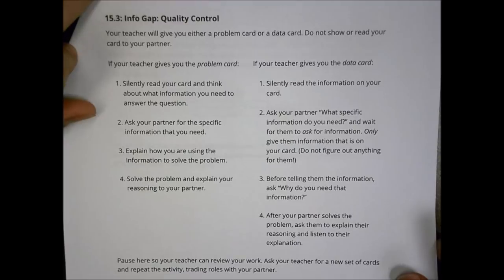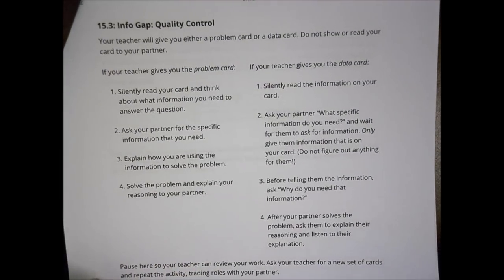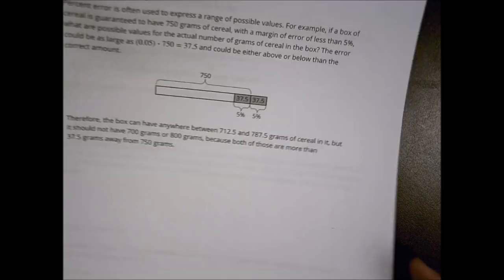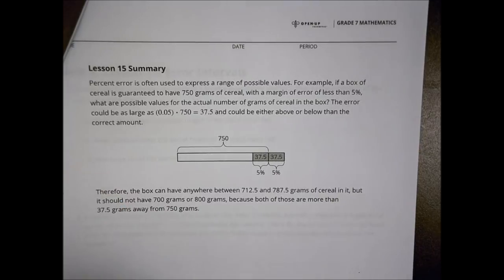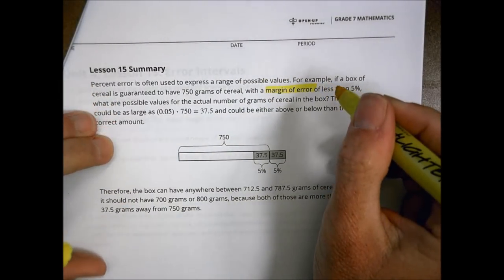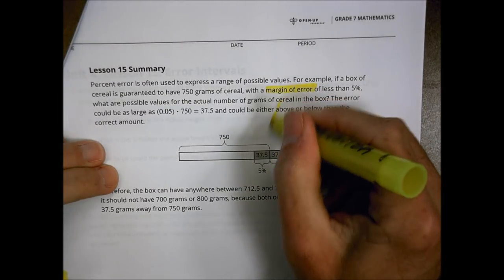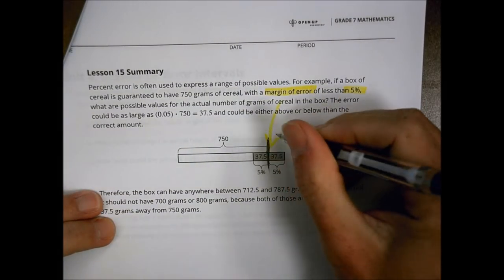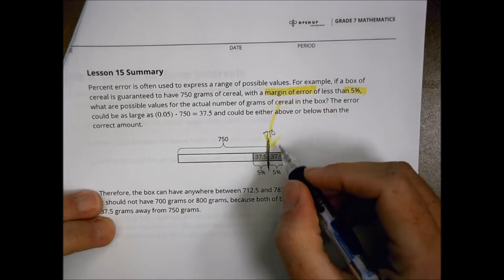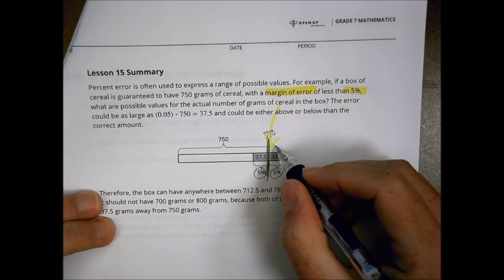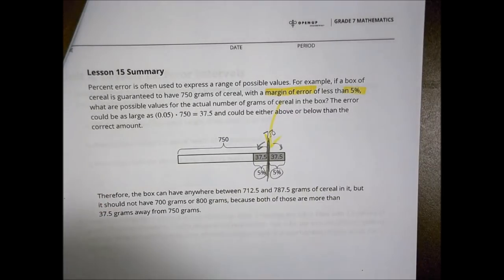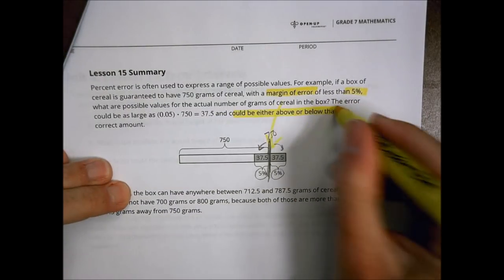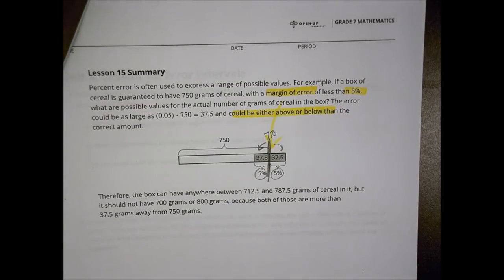Let's flip over to the summary today to wrap it up. Here's our lesson summary: we're really talking about a margin of error — how far off is going to be okay? This example here has a margin of error for a cereal box of about 5%. If the cereal box is 750 grams of cereal, I have a margin of error of 5% on both sides of that line, meaning I can have 5% more or 5% less and still be okay. It could be either above or below the correct amount. That's what we're looking at with our error interval today.